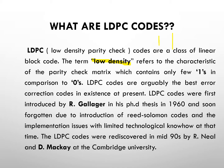LDPC codes are arguably the best error correction codes in existence at present. They were first introduced by R. Gallager in his PhD thesis in 1960. However, due to lesser technological know-how at the time, they were not implemented. Also, Reed-Solomon codes were introduced around the same time, so LDPC codes were neglected. They were rediscovered in the mid-90s by R. Neal and MacKay at Cambridge University.